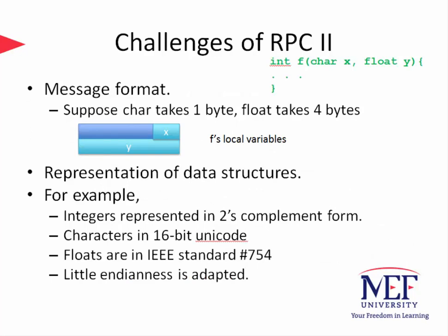Let us explore the message format. Suppose a character takes up one byte of memory and a floating number takes up four bytes. A 32-bit register will hold one byte of character value in the LSB positions, but depending on the endianness, the interpretation of these bits will differ across heterogeneous operating systems or hardware — that will corrupt the data. Also, the way we represent data structures is important: negative numbers may be represented in two's complement or one's complement form, and characters can be represented in 16-bit Unicode. The main idea is to remove all ambiguity so that remote machines know all these details to implement RPC accurately.